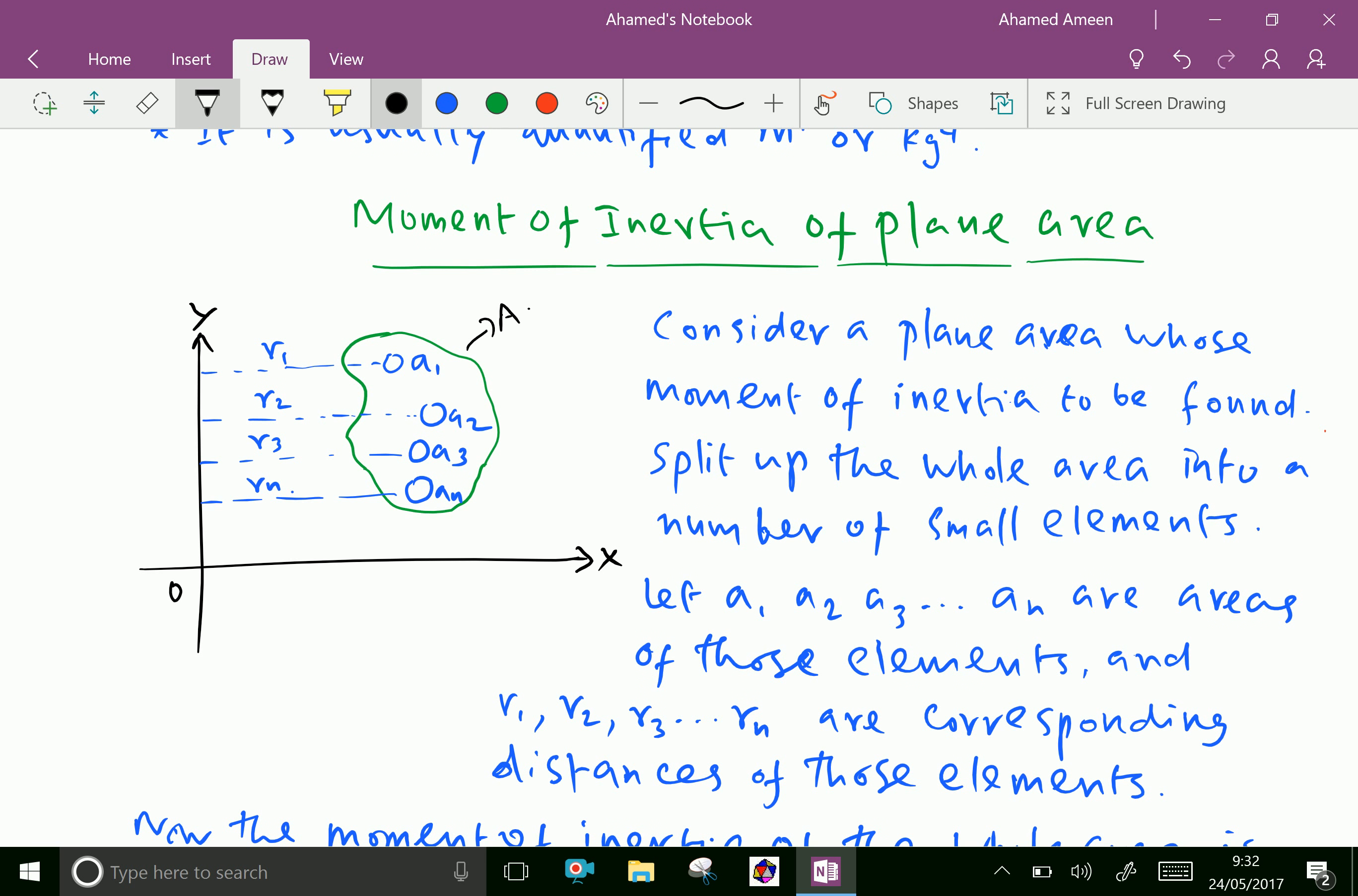Now consider the plane area whose moment of inertia to be found. Split the whole area into a number of small elemental areas means A1, A2, A3, A4 and up to An, that means that the complete lamina is split as smaller pieces of areas.